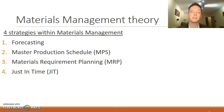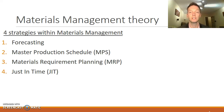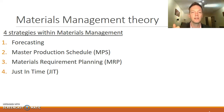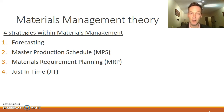Let's talk about materials management theory — a bit of a recap. There are four key strategies within materials management. Think of it as one tool that the operations manager has that can do four different things, and those things are forecasting, master production scheduling, materials requirements planning, and just in time.